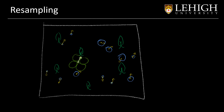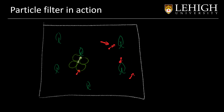Coming back to our example, after doing the resampling we will see that some particles are not selected, and some particles are repeated multiple times — like three times, two times, three times, not selected, twice, not selected, not selected, not selected, and three times. So we have a new belief of the state of the robot.